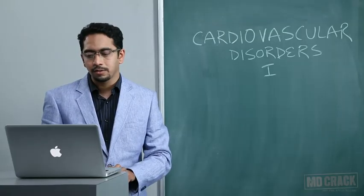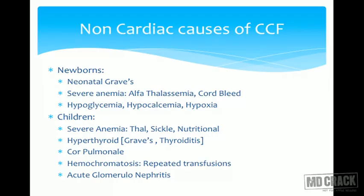Non-cardiac causes of cardiac failure include metabolic derangements, anemia, hyperthyroidism, and in children, long-standing pulmonary conditions giving rise to cor pulmonale. Hemochromatosis as a result of repeated transfusions will ultimately affect the heart and give rise to cardiomyopathy. Acute glomerulonephritis also presents with acute-onset volume overload giving rise to congestive cardiac failure.